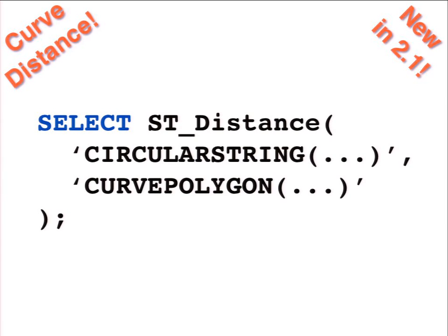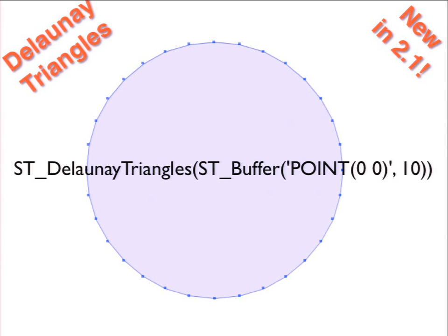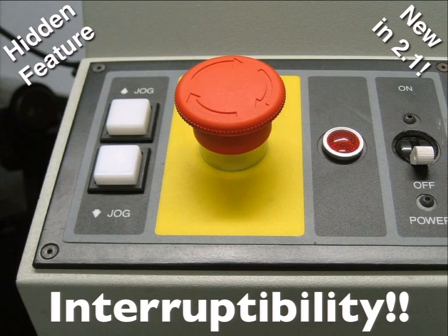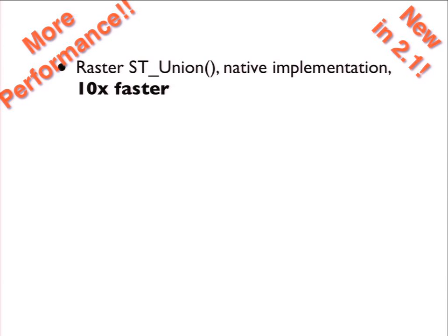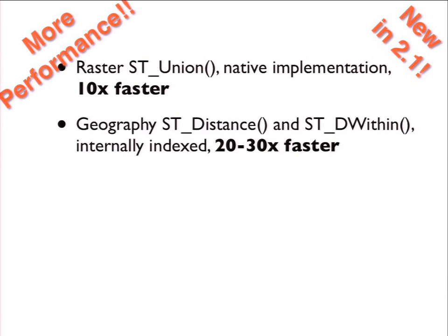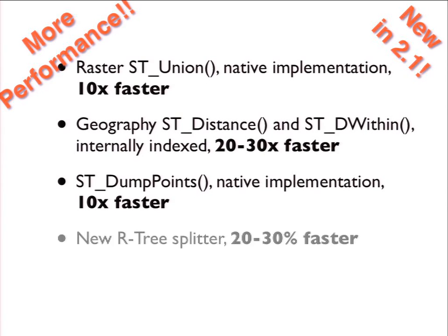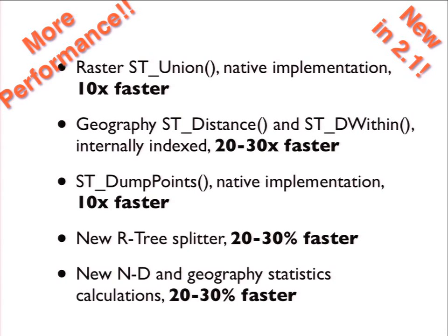Curve support has been in PostGIS since 1.2 and keeps getting more complete — you can convert curves to line strings and vice versa. Version 2.x also added Delaunay triangulation. Interruptibility has been added since 2.1: when running a database in the cloud, you need to be able to interrupt long-running processes. Every function in PostGIS and GEOS is now interruptible. Version 2.1 also brought major performance improvements: ST_Union faster for rasters, geography distance 20-30x faster, dumping all points from geometry 10x faster, a new R-tree splitting algorithm making R-tree access 20-30% faster, and better ND and geography statistics for 20-30% faster complex queries.